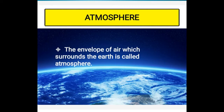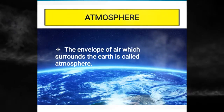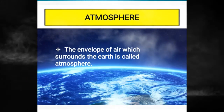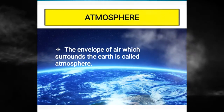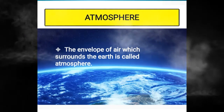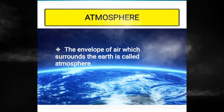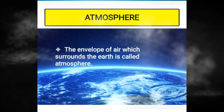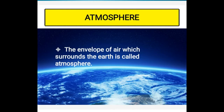The envelope of air which surrounds the earth is called the atmosphere, and it is held to the earth due to gravity. When compared to the earth, the atmosphere is a very thin layer. Its exact thickness is unknown, but it is estimated that the upper limit of the atmosphere is at a height of about 1600 kilometers from mean sea level. The density of air decreases with increase in height.